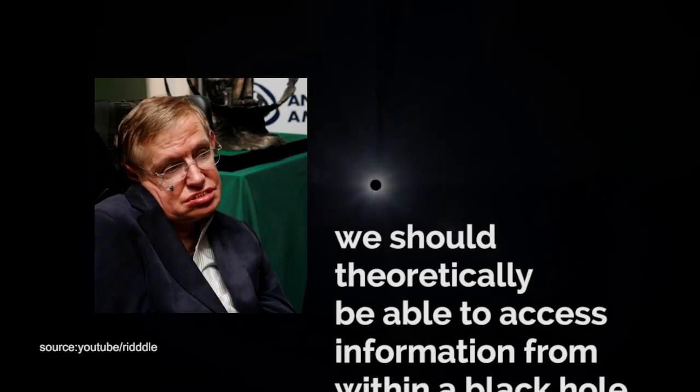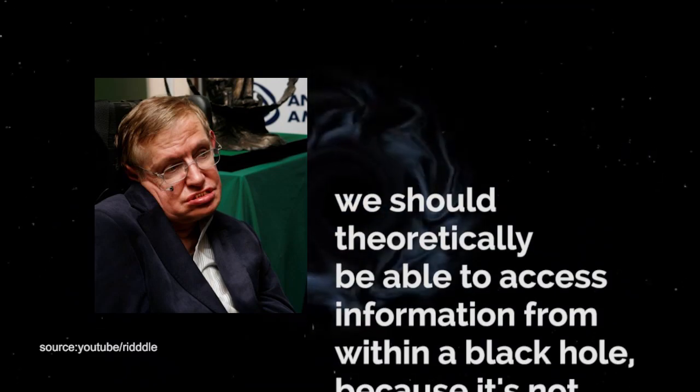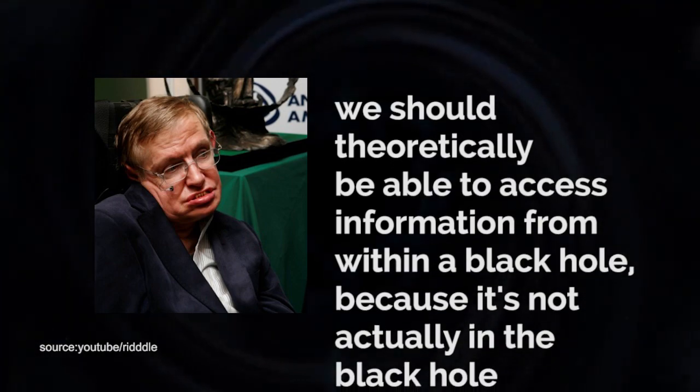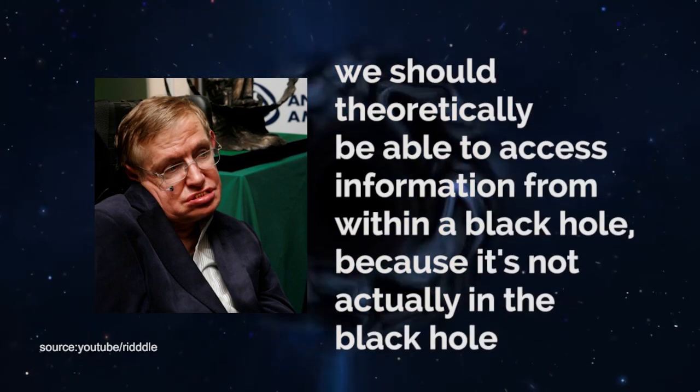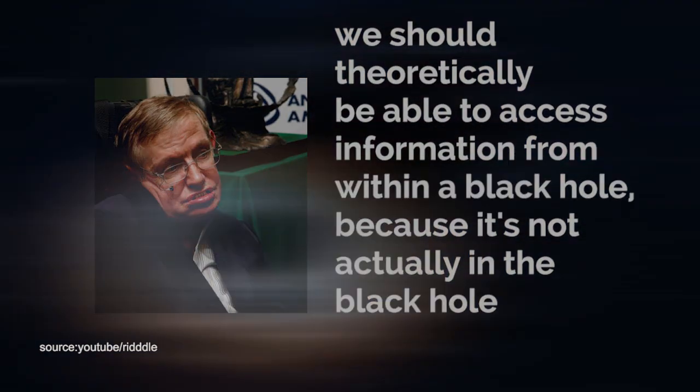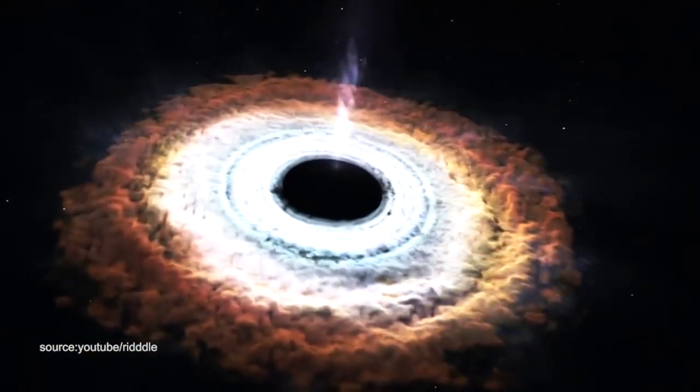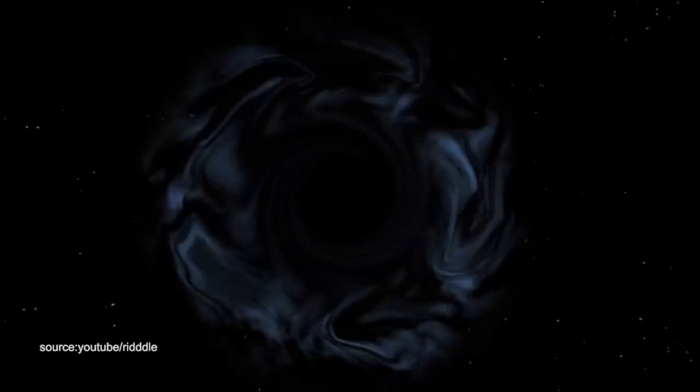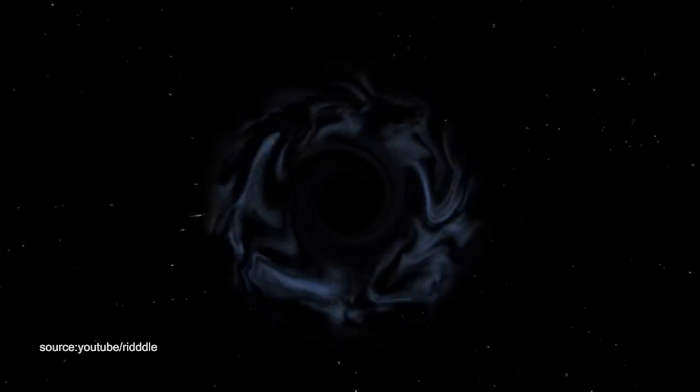To make matters even more confusing, Dr. Stephen Hawking theorized that we should theoretically be able to access information from within a black hole, because it's not actually in the black hole. According to Dr. Hawking, information from inside a black hole is stored around the event horizon, the point where nothing can escape, not even light, which means we could access it. Of course, this theory is a paradox, since how can information from inside a black hole actually be outside of it?